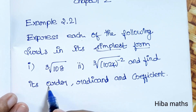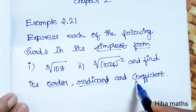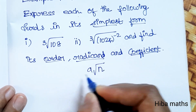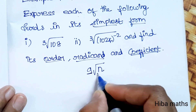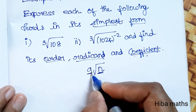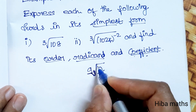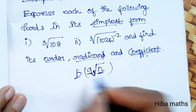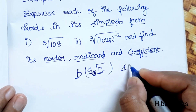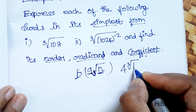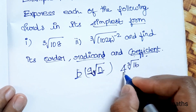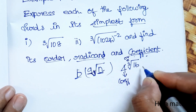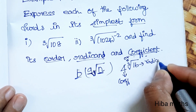Find the order, radicant, and coefficient. First of all, for a root: A is the coefficient, N is the order, and the radicant is under the radical. For example, in 4 cubic root of 16: 4 is the coefficient, 3 is the order, and 16 is the radicant.